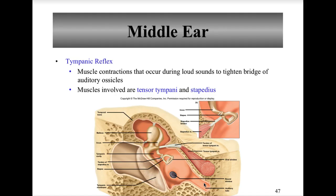The malleus, incus, and stapes are visible in anatomical diagrams. The auditory eustachian tube is a passageway that connects the middle ear to the nasopharynx of the throat. Its function is to equalize pressure on both sides of the tympanic membrane, which is necessary for proper hearing.